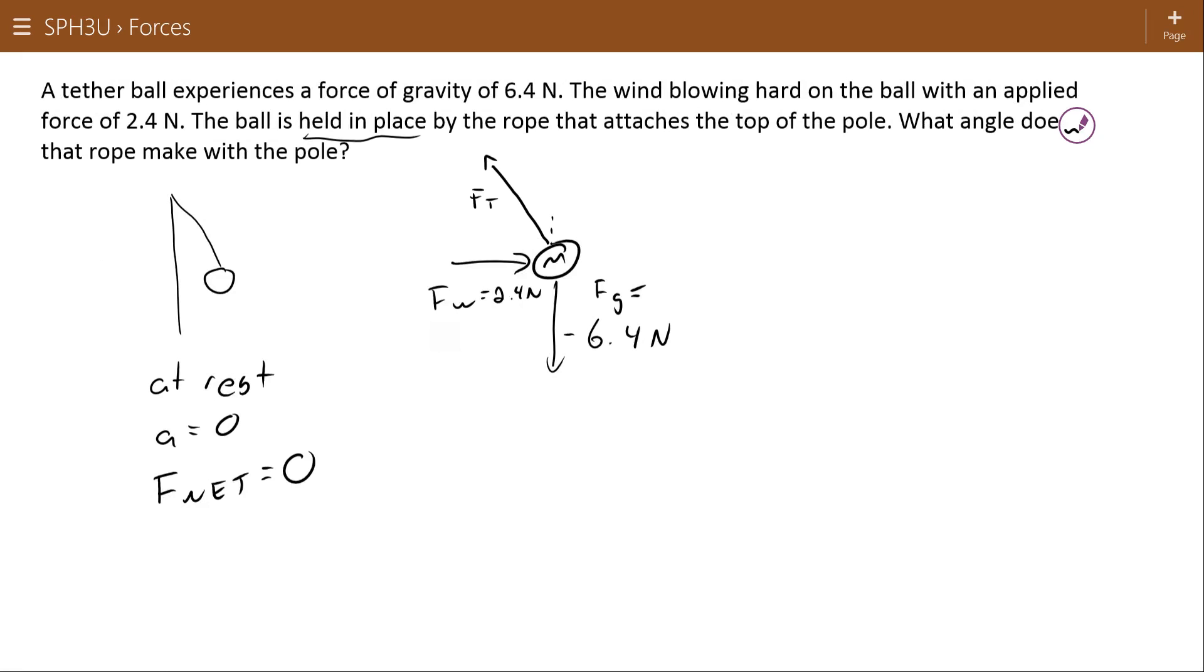What that means is that we can think of it in two components that are in the directions we're using: Fty and Ftx. And then without really doing any serious mathematics, we can see by inspection what those two values will be. The force of gravity is pulling down with 6.4, so this force must be pulling up with 6.4 newtons.